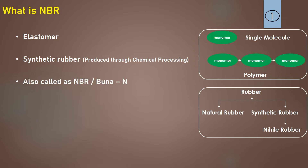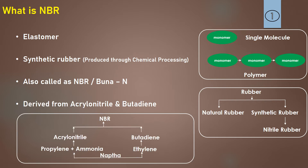NBR is also called Buna N. It is derived from acrylonitrile and butadiene. Understanding its raw material route: naphtha is a byproduct of crude oil, and propylene and ethylene are naphtha's byproducts, which are the base materials for manufacturing acrylonitrile and butadiene. These are then processed through chemical processing to yield NBR.